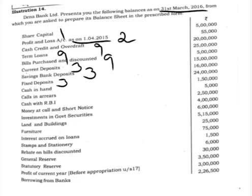Cash in hand is shown in note number 6, which covers cash and balances with RBI. Calls in arrears is an adjustment to share capital — some shareholders did not pay, so calls in arrears of 5,000 must be deducted from the total share capital of 5 lakh. Cash with RBI is also shown in note number 6 along with cash in hand. Money at call and short notice comes in note number 7. Investment in government securities is shown under investments in note number 8.